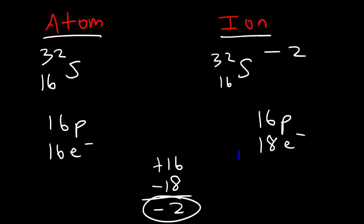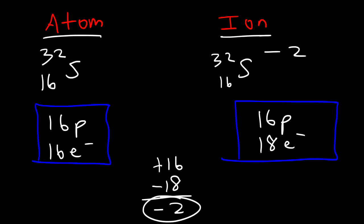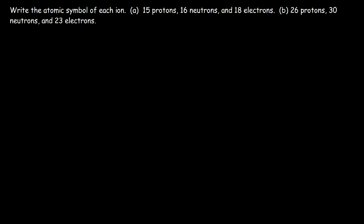Keep in mind: ions have different numbers of protons and electrons, but atoms have the same number of protons and electrons. Now let's work on some problems. Write the atomic symbol of each ion, given the number of protons, neutrons, and electrons.